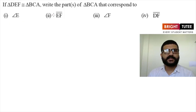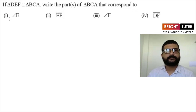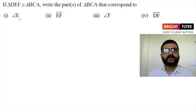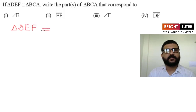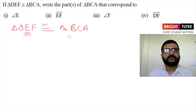The last question: if triangle DEF is congruent to triangle BCA, write the parts of triangle BCA that correspond to the given parts. First, angle E — which part of triangle BCA corresponds to angle E? From the congruency relation triangle DEF corresponds to triangle BCA, angle E will correspond to angle C. So the answer for the first part is angle C.